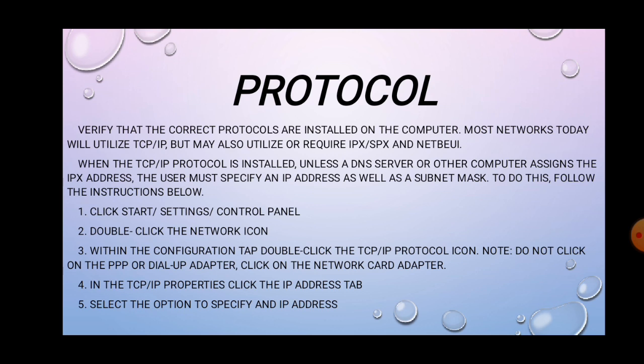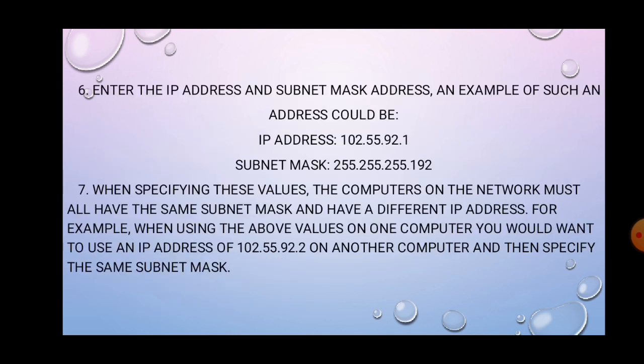First, click Start, Settings, Control Panel. Second, double-click the Network icon. Third, within the Configuration tab, double-click the TCP/IP protocol icon. Note: do not click on the PPP or dial-up adapter — click on the network card adapter. Fourth, in the TCP/IP Properties, click the IP Address tab. Fifth, select the option to specify an IP address. Enter the IP address and subnet mask.